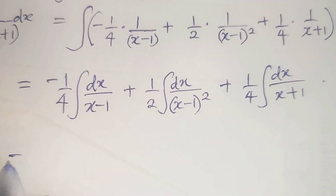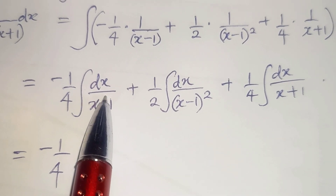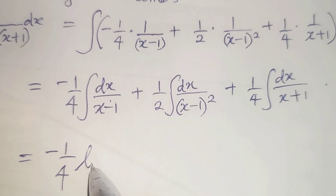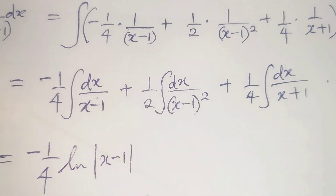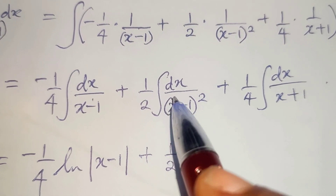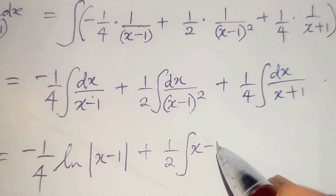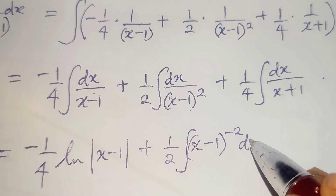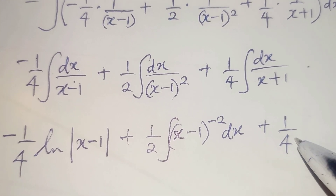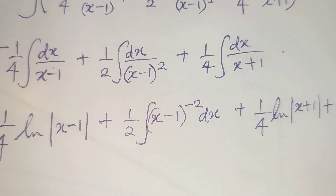Evaluating the integrals: the first gives minus 1/4 times ln|x minus 1|. The second integral of (x minus 1) to the power minus 2 dx is handled using the power rule. The third gives 1/4 times ln|x plus 1|, plus a constant of integration C.